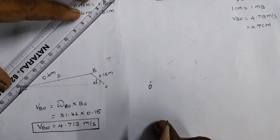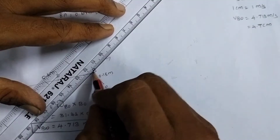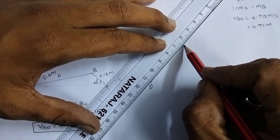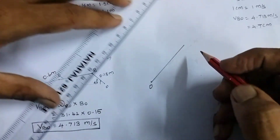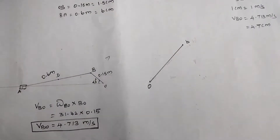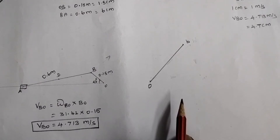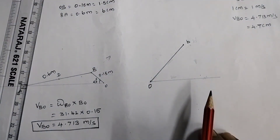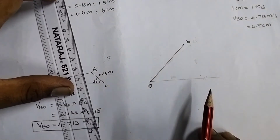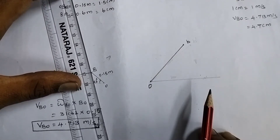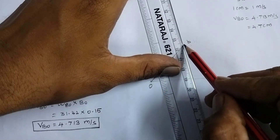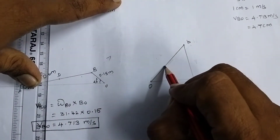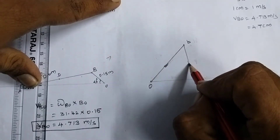The velocity of link OB acts perpendicular to link OB. Draw the velocity vector perpendicular to OB at a length of 4.7 cm. This is point b in the velocity diagram. The velocity of the slider acts horizontally. Draw a horizontal line from the origin, and a line perpendicular to link AB from point b. The intersection gives point a.